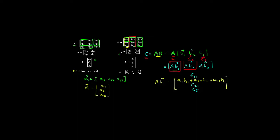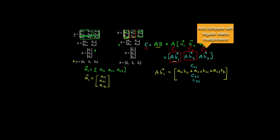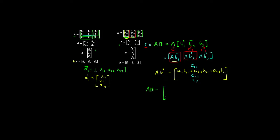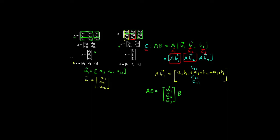Have a go at multiplying these out to really get the hang of it. We can also represent this same product of matrices using the row vectors of A. We represent matrix A using its row vectors and then multiply by matrix B. The row vector A1 is this first row, A2 is the second row, and A3 has the elements in the third row of matrix A.